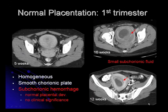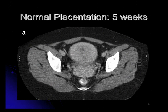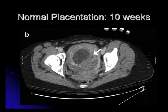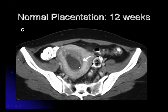These are some examples of normal placenta during the first trimester. Early on, at five weeks, the appearance is very homogeneous and there's a smooth chorionic plate. Later on in placental development, you can see subchorionic hemorrhages, which appear more heterogeneous but are of no clinical significance. At five weeks, the placenta is not distinguished from the uterine components and there is no evidence of a fetus. At 10 weeks, the placenta is a little more heterogeneous, and there are subchorionic fluid collections developing, demarcated by the white arrows. Pretty much the same thing at 12 weeks.